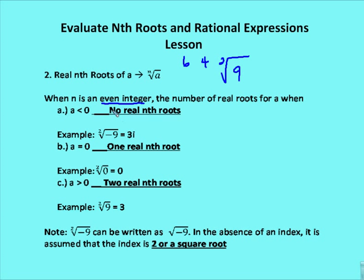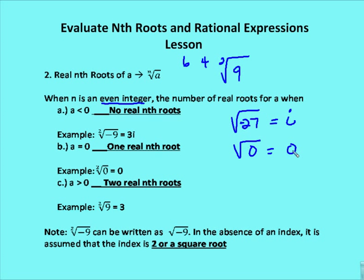For even roots, there are three cases based on the radicand. When a is less than 0 — for example, the square root of negative 27 — there is no real root; the result is imaginary. When a equals 0, the result is always 0 — one real root. Zero times itself any number of times is always 0.